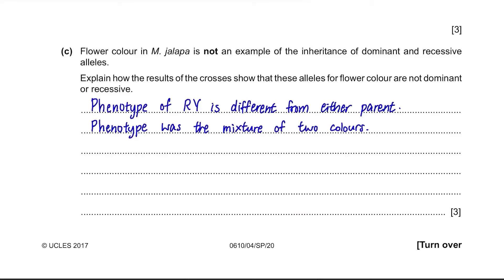Another result that proves this is that if these were dominant and recessive alleles, the offspring of cross 3 and 4 would give one phenotype only, because there would be no such thing as R-Y, just R-R and Y-Y. But here we got two phenotypes each, meaning that they are not dominant or recessive alleles.